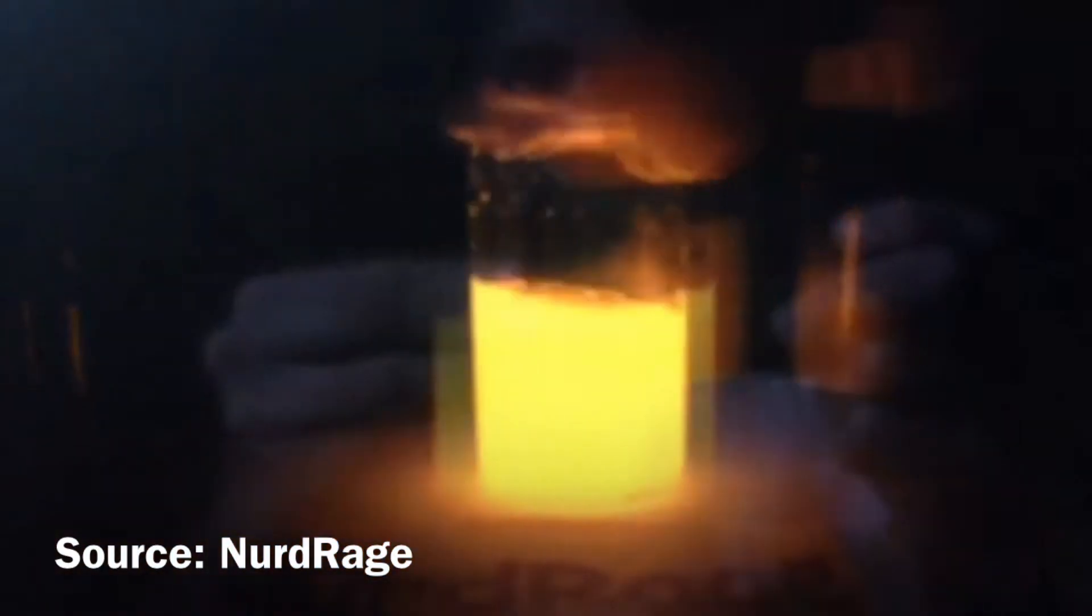Hello everyone and welcome back to the lab. In this video I'll be making diethyl phthalate. This chemical is used as a solvent in glow sticks.